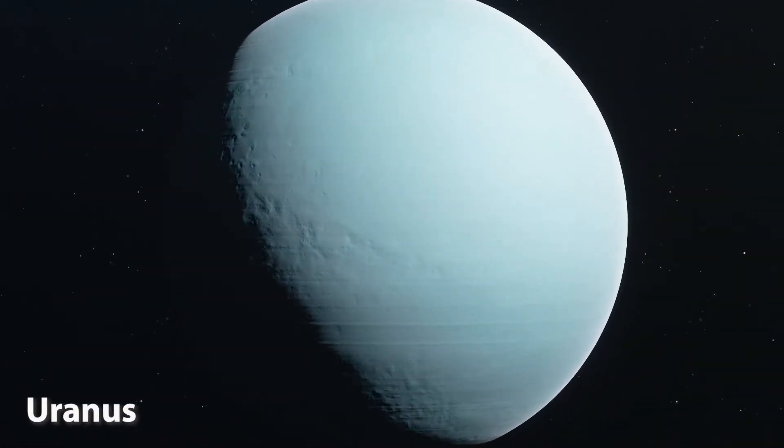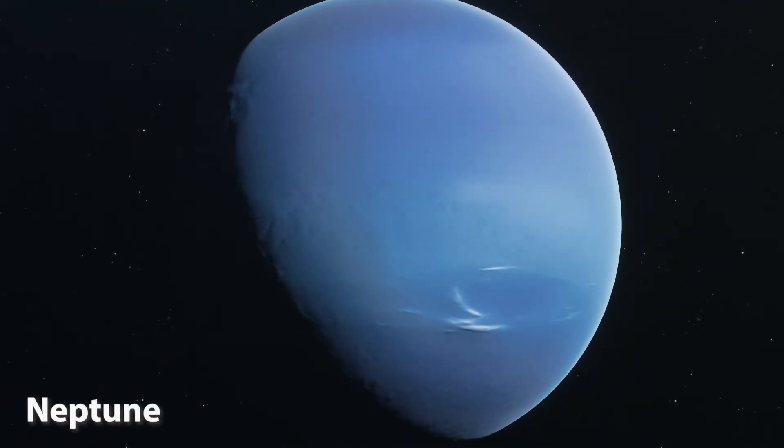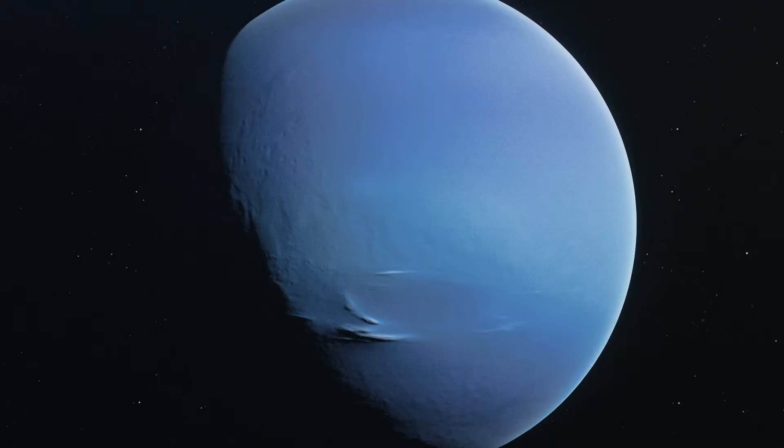The two planets furthest from the Sun are Uranus and Neptune. When these planets formed, they were made up of frozen water and gases. They are often called ice giants.